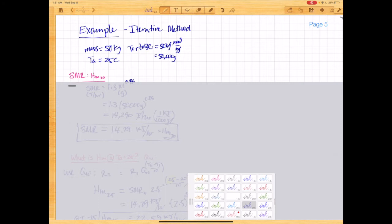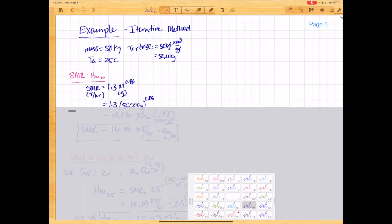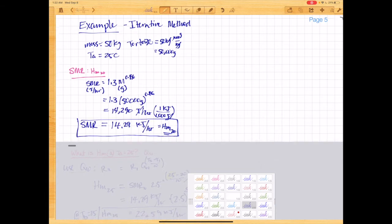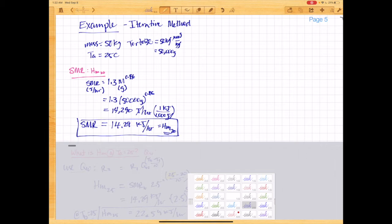So we first start off by calculating this animal's SMR, or the heat of metabolism at 20 degrees Celsius. So using a scaling equation from Withers for tortoises, 1.3 mass in grams to the 0.86 power gives us the SMR in joules per hour. So for 50,000 grams, that turns out to be 14,290 joules per hour, or 14.29 kilojoules per hour. So that's the metabolic rate at the body temperature of 20.